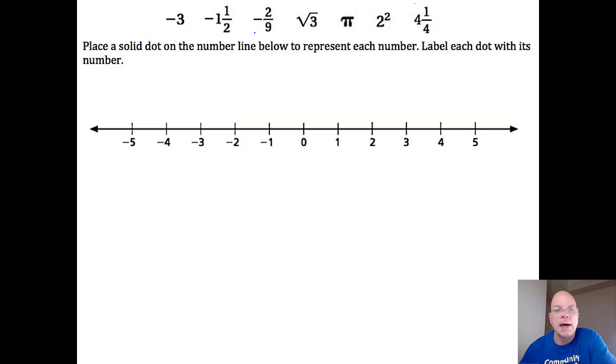We agreed that, well, this is the order we agreed on earlier. So negative three is just negative three. Negative one and one-half, since that's not shown on the number line, I'll label that. Negative two-ninths, I mean, negative four-point-five-ninths would be right in the middle, so it's a little bit less than a fourth even. Negative two-ninths would be right there.